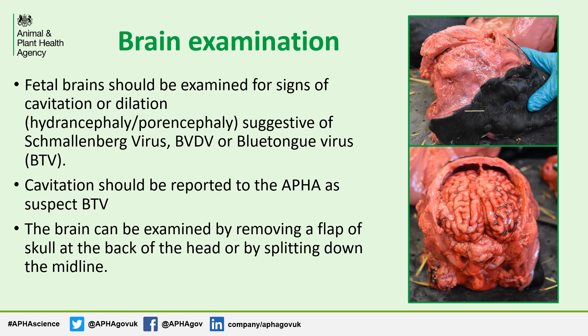All fetal brains must be examined for hydranencephaly or porencephaly. These present as dilation or cavitation. Presence of these could indicate bluetongue, Schmallenberg or BVD, and any cavitation needs to be reported to APHA as suspected bluetongue. Depending on what tools you have available, the brain can be examined by either removing a flap of skull at the back of the head as shown in the images on this slide, or you can simply split the skull straight down the midline.